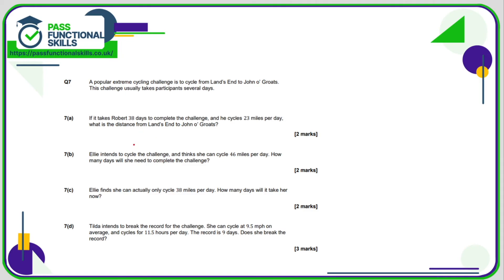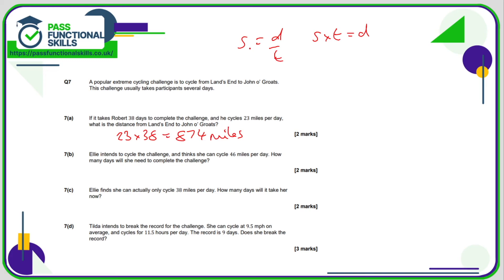For question number 7, we're looking at a cycling challenge from Land's End to John O'Groats. Robert takes 38 days and cycles 23 miles per day, so the total distance is speed multiplied by time: 23 times 38 equals 874 miles. Ellie intends to cycle 46 miles per day, so how many days will she need? Time is distance divided by speed: 874 divided by 46 comes to 19 days.